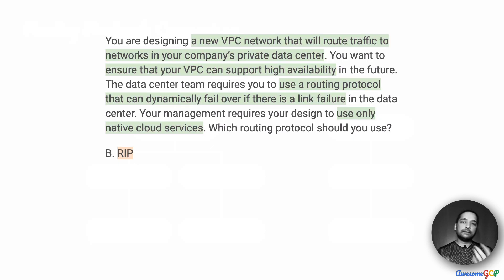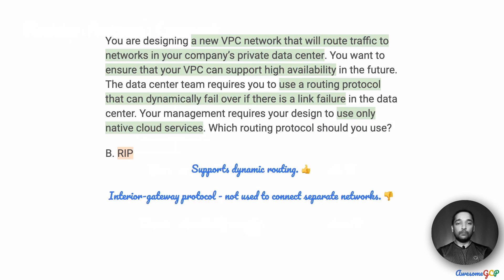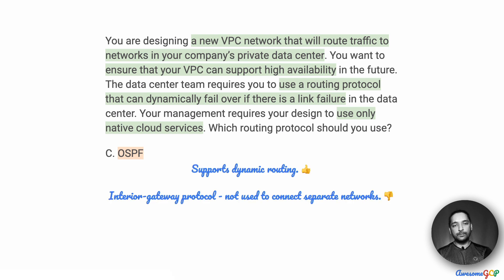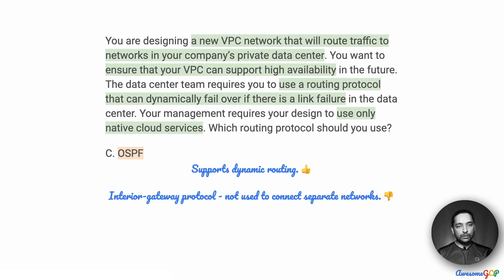Answering the rest of the question becomes easy. RIP is an interior gateway protocol — it does support dynamic routing; however, it is usually used within an autonomous system and not between separate networks, so we can eliminate option B. Similarly, we can eliminate option C, which is OSPF, because even though it is a dynamic routing protocol, it is an interior gateway protocol used to connect systems within an autonomous system.